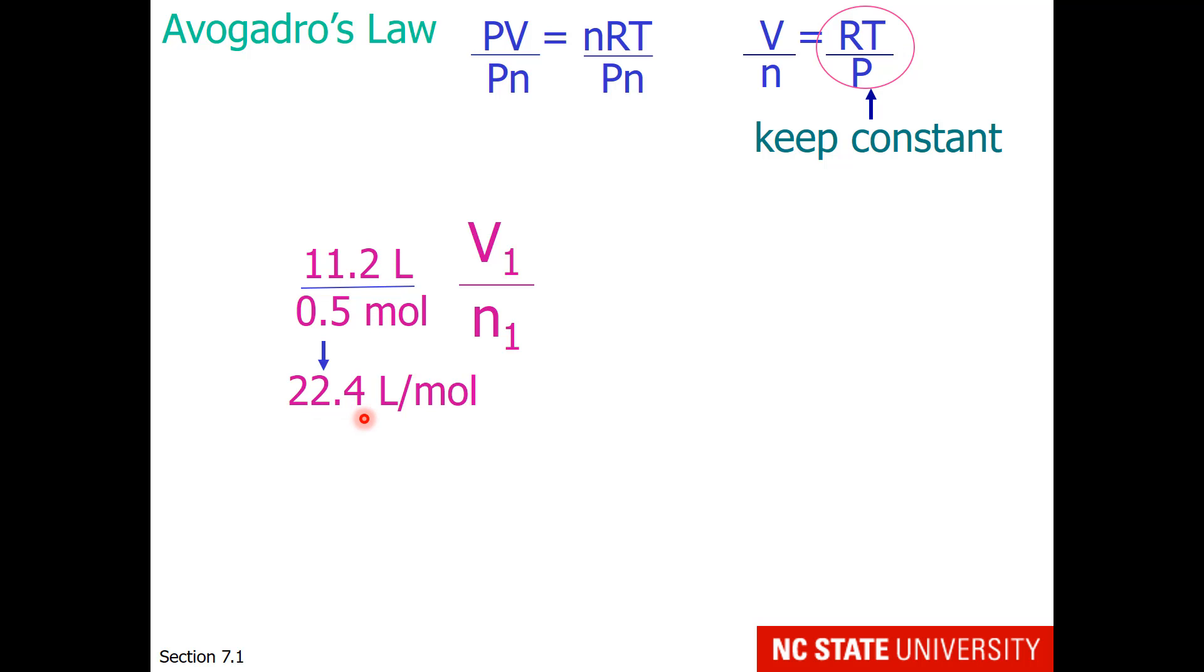This ratio is 22.4 liters per mole, which by the way is the typical volume of a gas at room temperature and pressure. This means if we change the moles of gas, we still have to have the same ratio of 22.4 liters per mole. So if the moles of gas increases to 2 moles, then the volume increases to 44.8 liters.